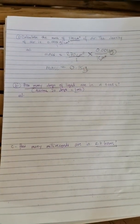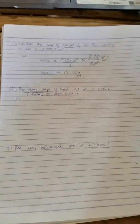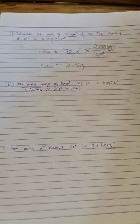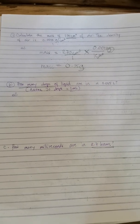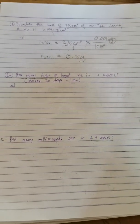For our second example, we are to find how many drops of liquid are in 0.05 liters, given that 20 drops is equal to 1 milliliter.